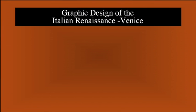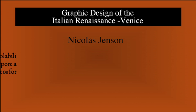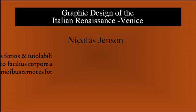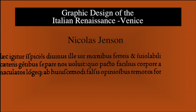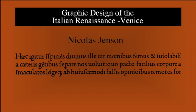Europe's eastern gate, Venice, was the city that led the way in Italian typography. Johannes de Spira, a German goldsmith, was given a five-year monopoly on printing in Venice. After his untimely death, Nicholas Jensen from France established a second printing press in Venice. Jensen's fame is one of the greatest typeface designers of all time.